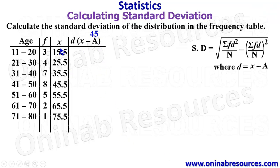So we start with the first value of x, which is 15.5. 15.5 minus 45 gives negative 29.5. 25.5 minus 45 gives minus 19.5. 35.5 minus 45 gives minus 9.5. 45.5 minus 45 gives 0.5. 55.5 minus 45 gives 10.5. 65.5 minus 45 gives 20.5. And finally, 75.5 minus 45 gives 30.5.